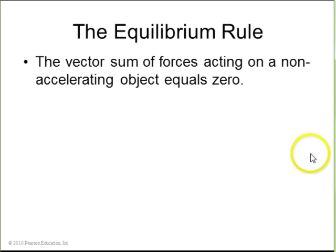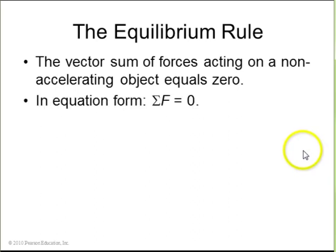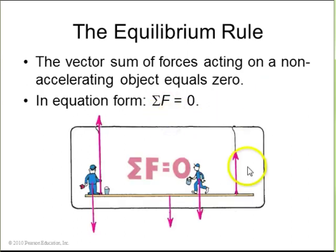Equilibrium rule is about when the vector sum of forces acting on an object equals zero. In this case, the object is not accelerated. So basically it's this. The sum, or this Greek letter sigma, capital sigma, the sum of all the forces equals zero, means that the object is not accelerated.